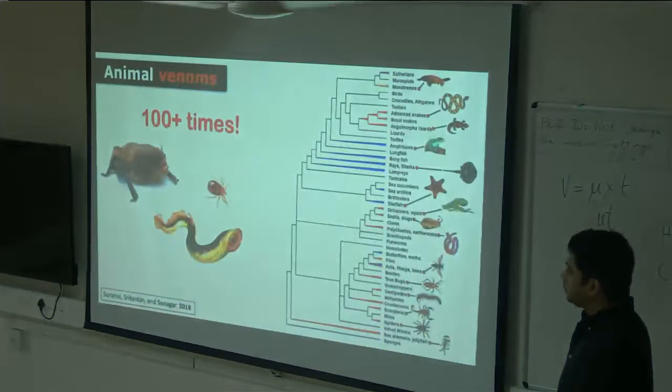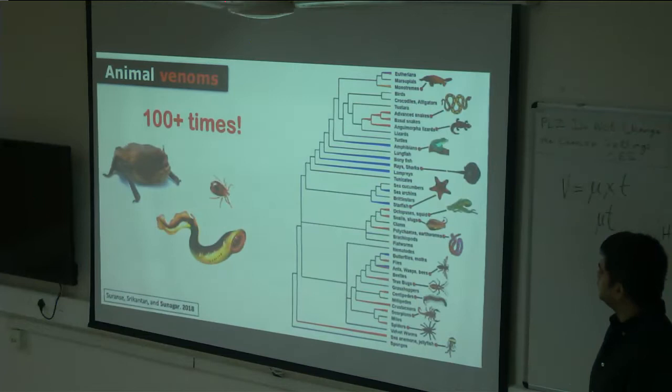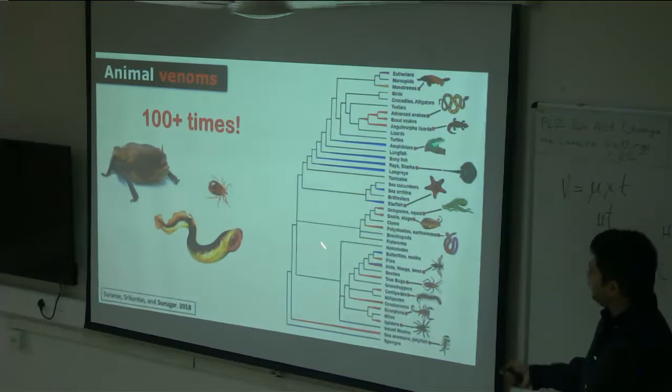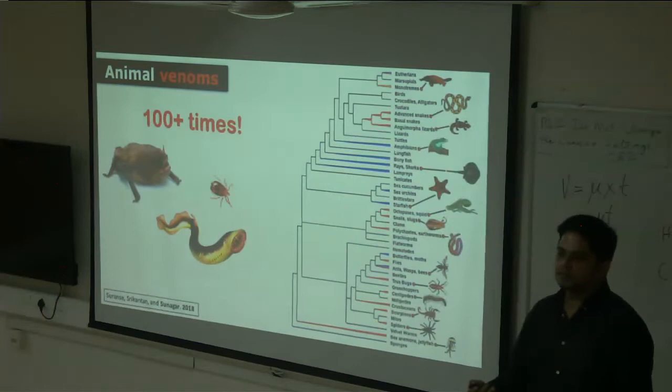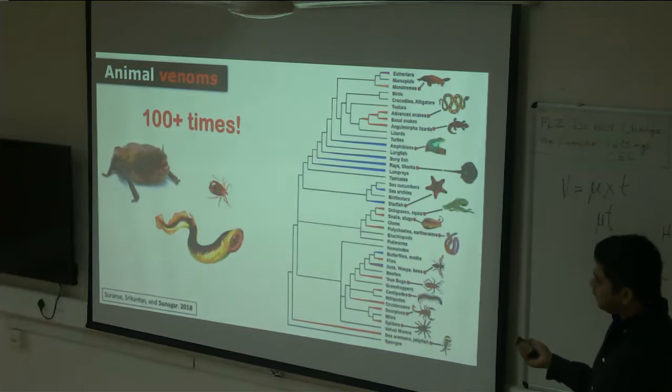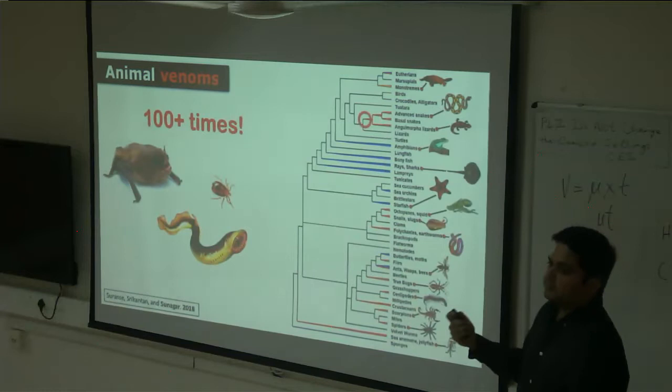You can already see why animal venoms are amazing systems to study evolutionary biology. They are complex, they have evolved independently, they have amazing specificity to various receptors, and prey and predators also evolve resistance. One of the most interesting questions in evolutionary biology is understanding the evolution of adaptive traits — and venom is an adaptive trait. So tracing where this particular trait evolved is a fascinating question.